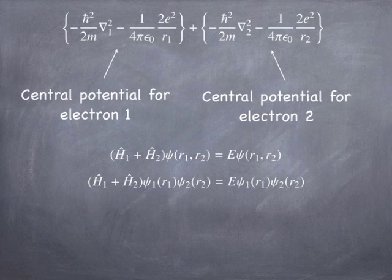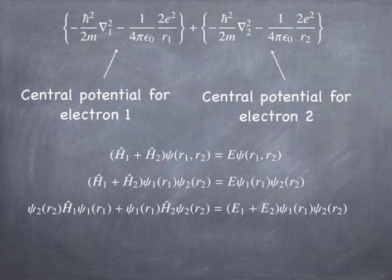We can do that in this circumstance and see that that allows us to satisfy the Schrödinger equation because Hamiltonian 1 only acts on wave function 1 and Hamiltonian 2 only acts on wave function 2. And we already know if those are hydrogenic wave functions, exact hydrogenic wave functions, and the Hamiltonians are exact hydrogenic Hamiltonians, that we already know the solution to that problem.